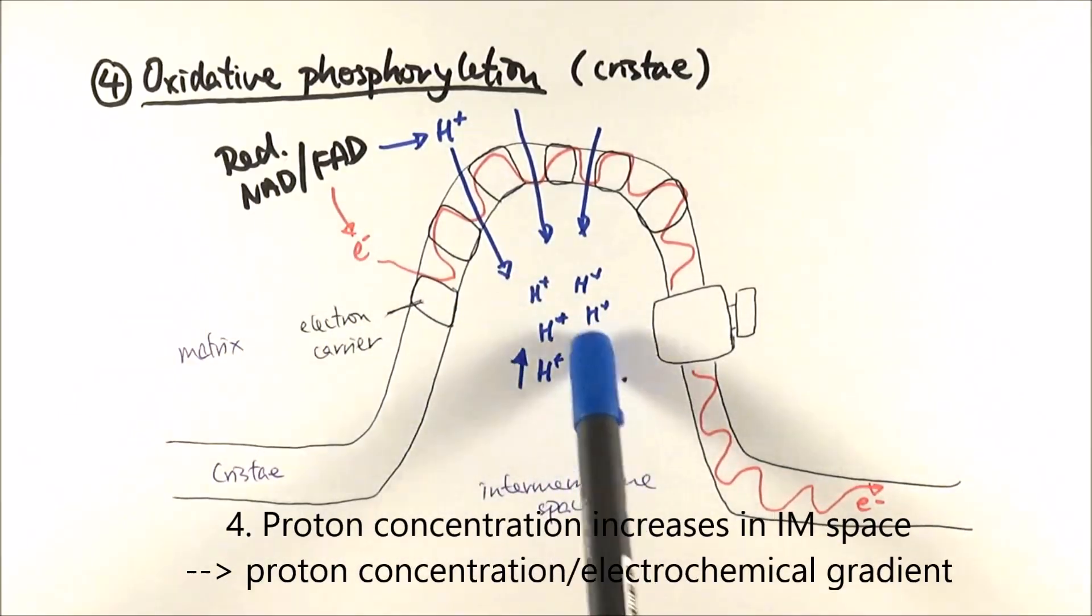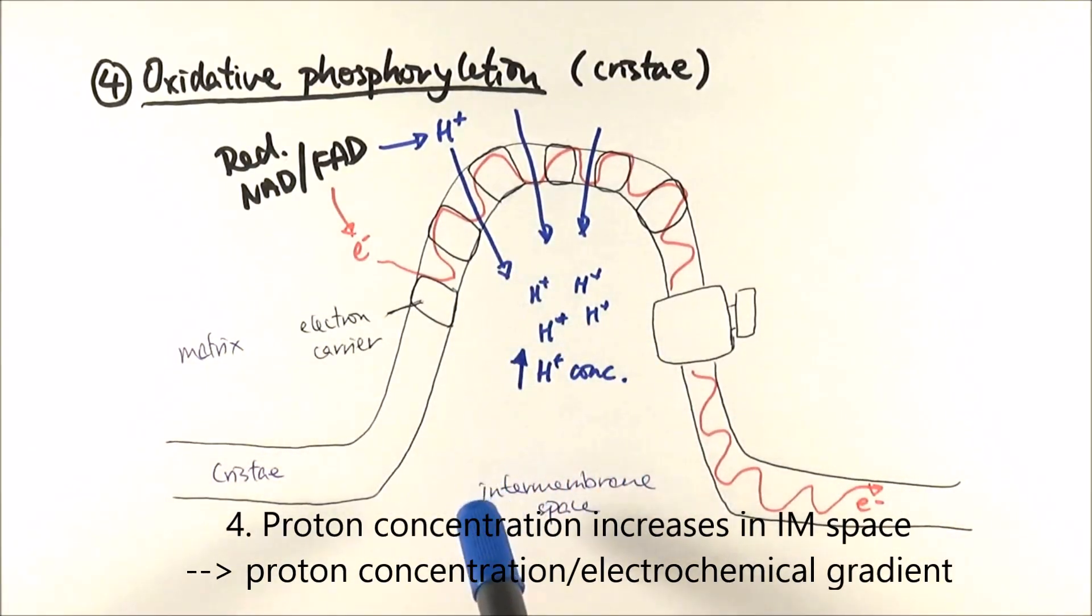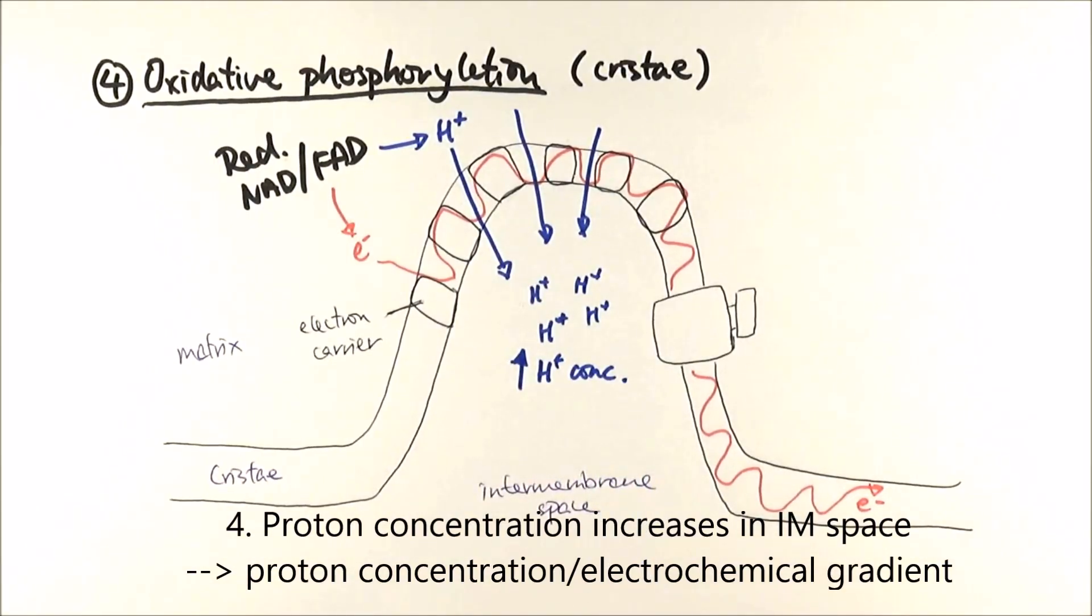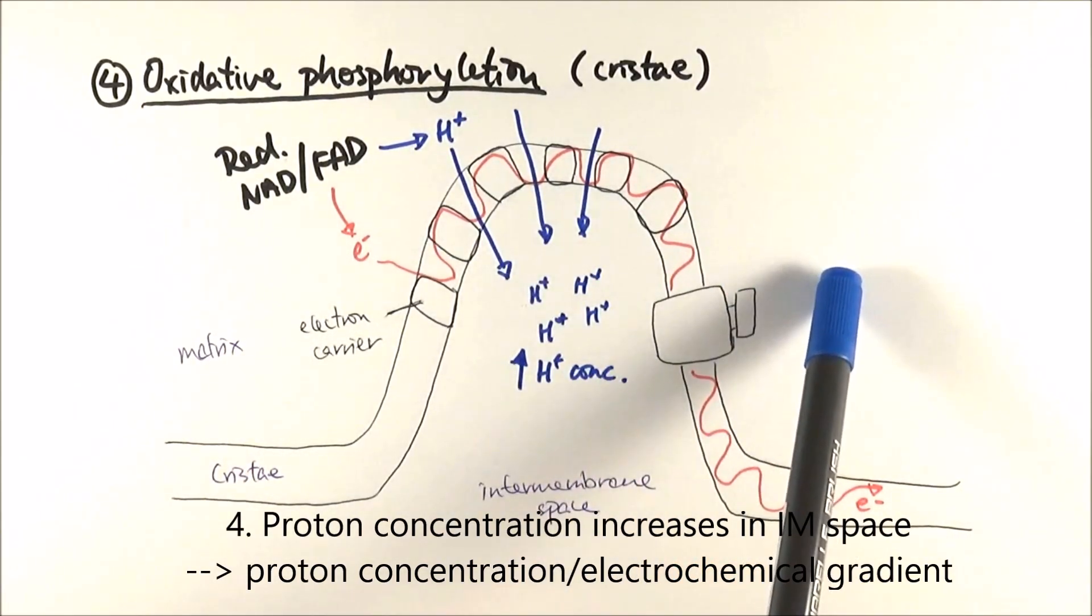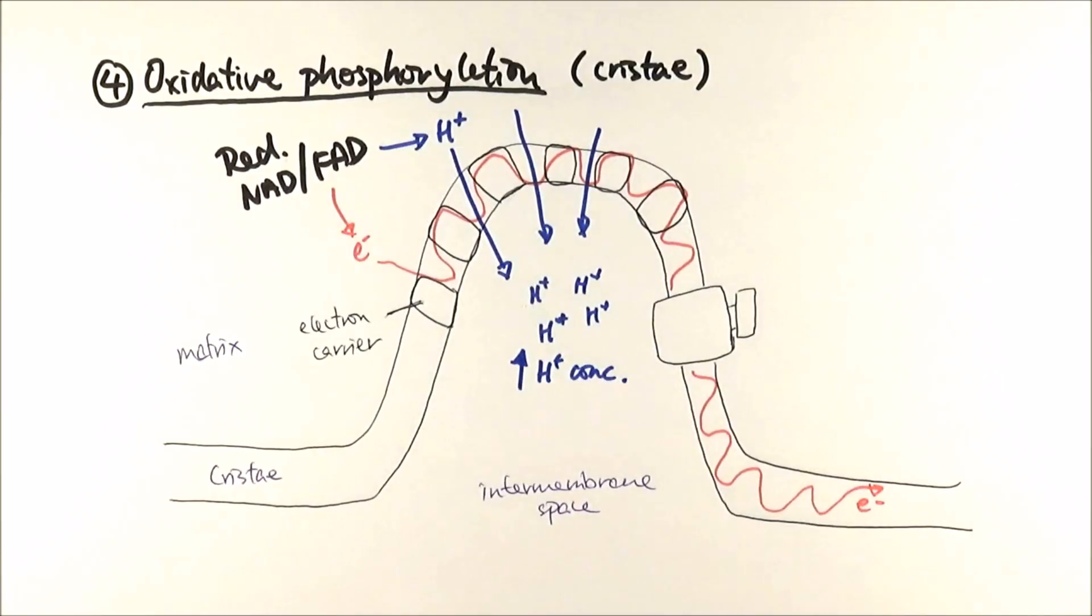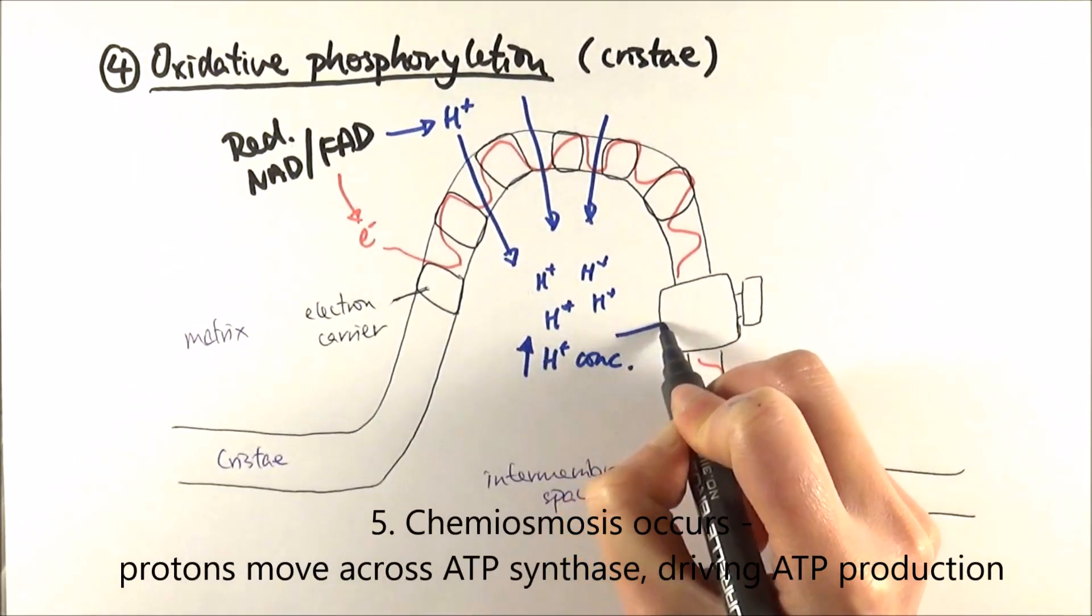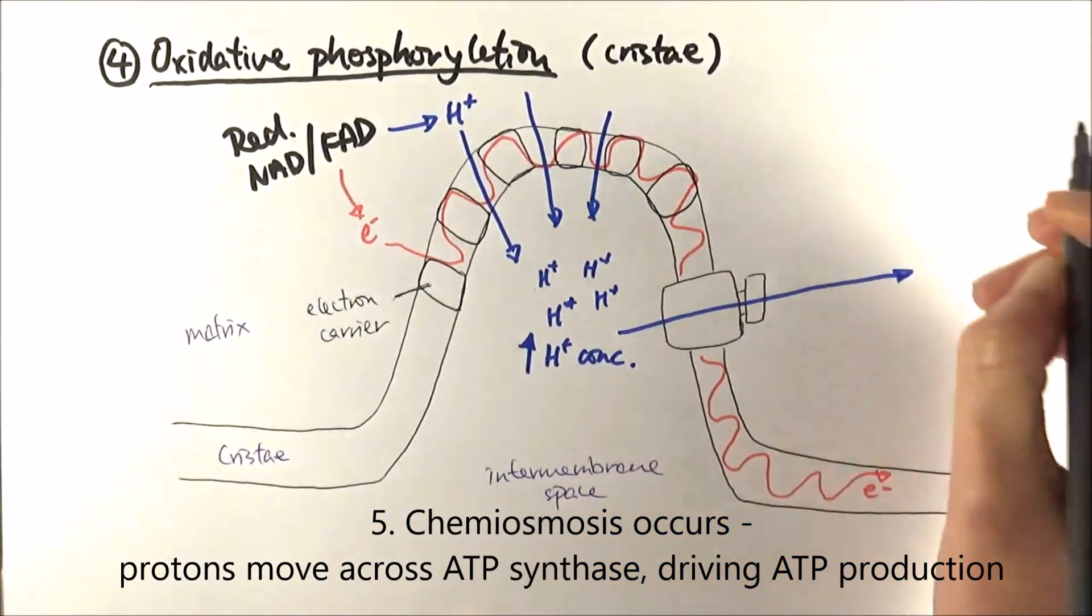So what you'll then get is lots and lots of protons here. Imagine them quite a lot gathered around. So eventually, we'll have protons accumulating in the intermembrane space, increasing in concentration. And this is what we mean by generating a proton concentration gradient, because there's more in here and very little outside at that point. When there is any concentration gradient, it means that diffusion can happen naturally. So we say the protons diffuse across.